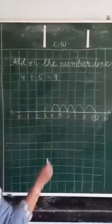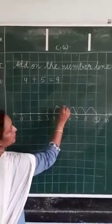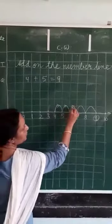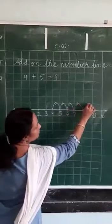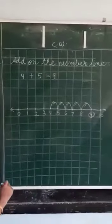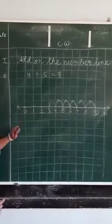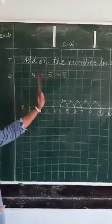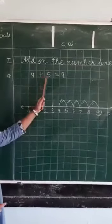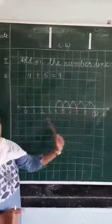Since we are moving towards right direction, we will mark arrows like that. And here we get the answer 4 plus 5 is equal to 9. We will do some more exercises in book and copy.